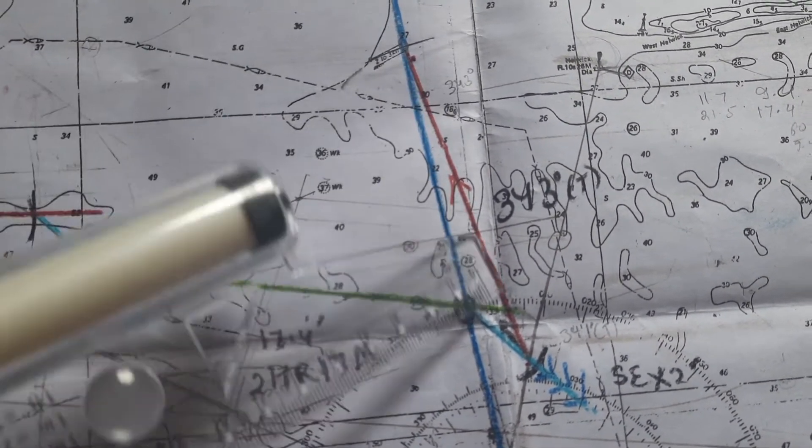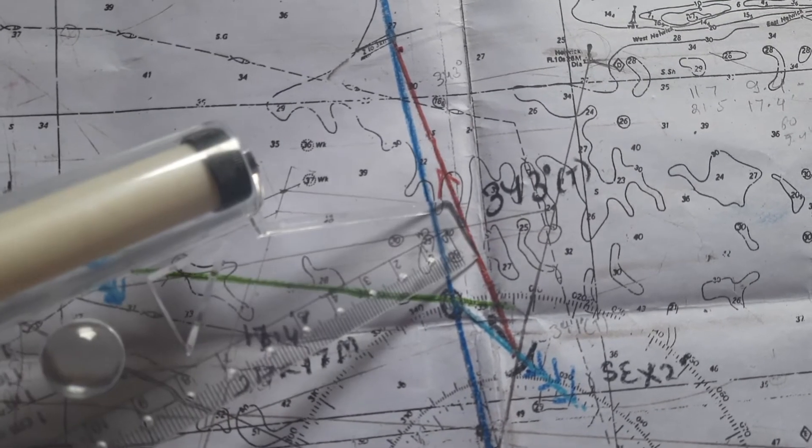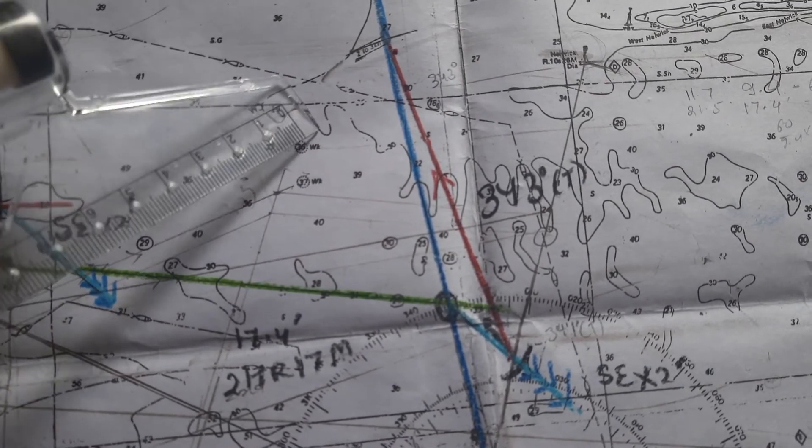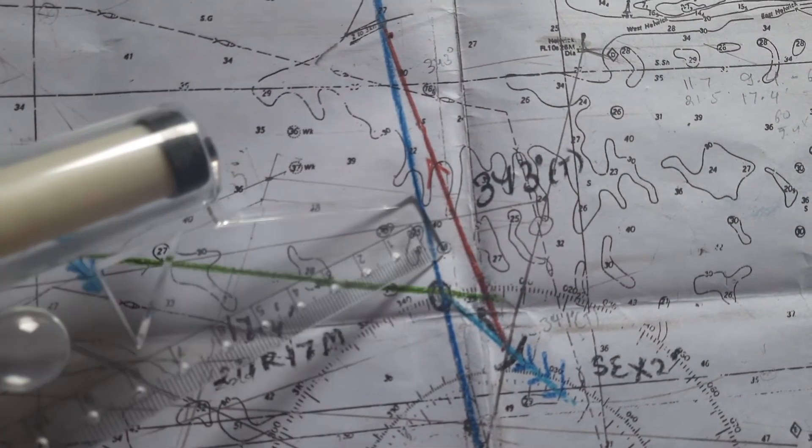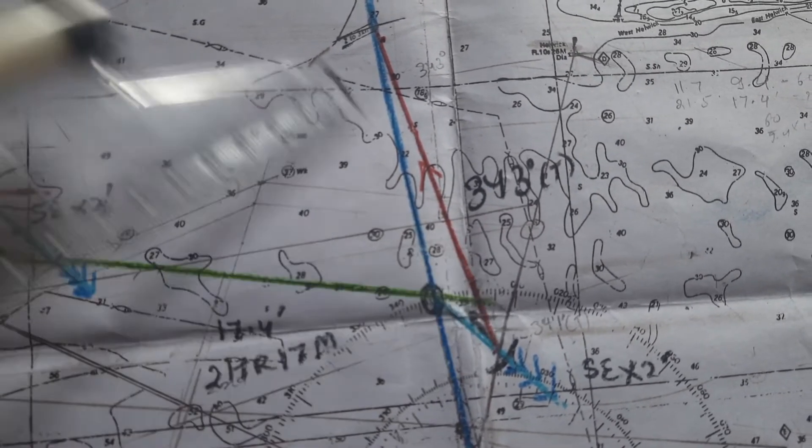And we join this to get the course to steer. So this is our leeway track and wind is coming from northwesterly. So to counteract northwesterly wind we go into the wind, so our course to steer will be 341 degrees true.